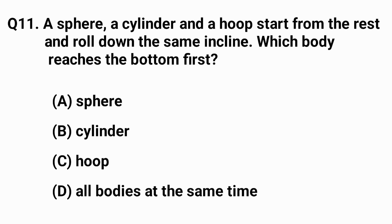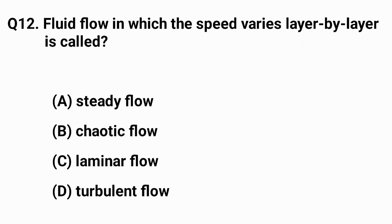The right answer is option A — sphere. Question number twelve: fluid flow in which the speed varies layer by layer is called what? The right answer is option C — laminar flow.